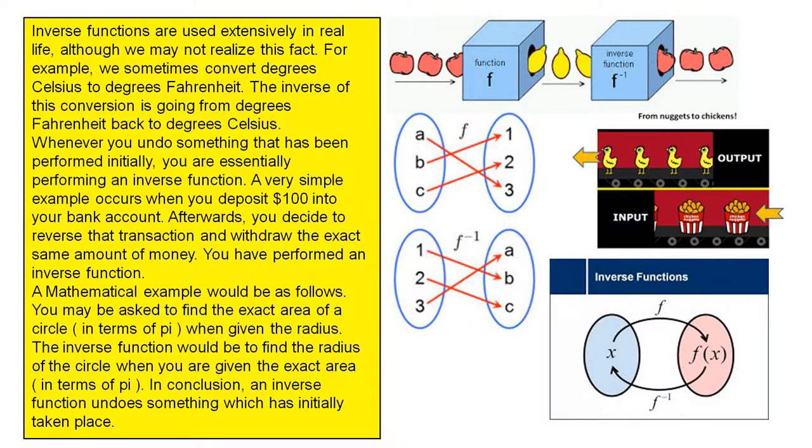A mathematical example would be as follows. You may be asked to find the exact area of a circle in terms of pi when given the radius. The inverse function would be to find the radius of the circle when you are given the exact area in terms of pi.